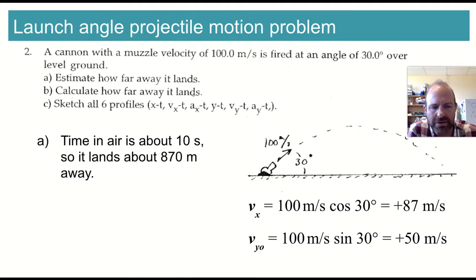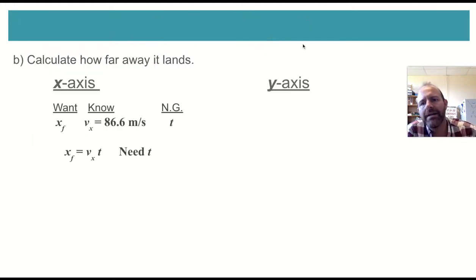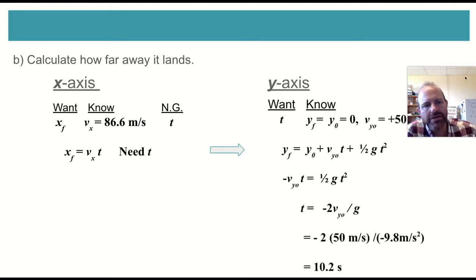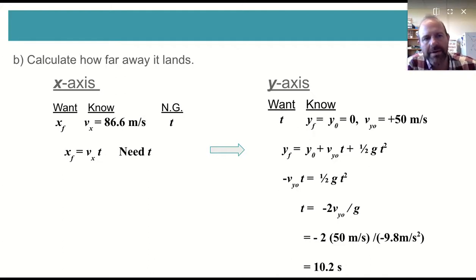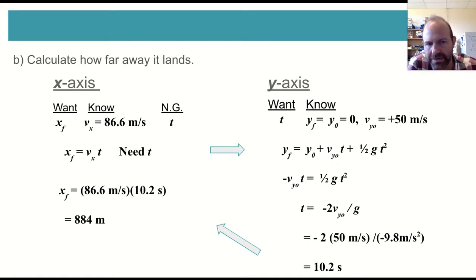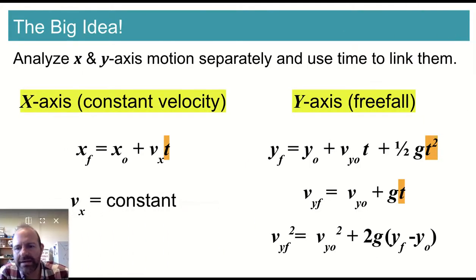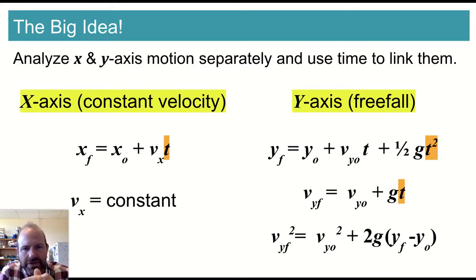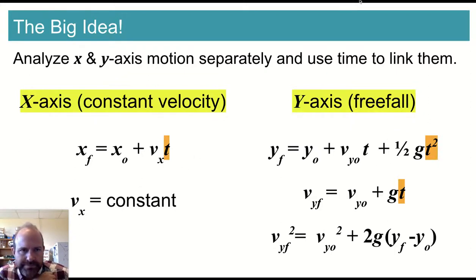Now we can do the actual calculation. Taking the x-axis, we're looking for time because we don't have it. In the y direction, we know everything we need to solve for time — about 10.2 seconds. Plugging that back into the equation, we find it lands at exactly 884 meters, using 9.8 as the value of g. So the big idea with projectile motion is that we have x-axis motion — which is constant velocity — y-axis motion — which is free fall — and we can link the x and y motion, which we deal with separately, with the use of time.